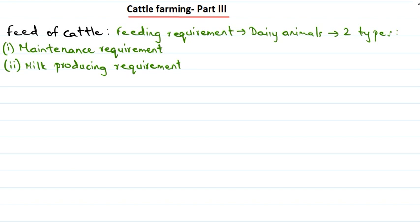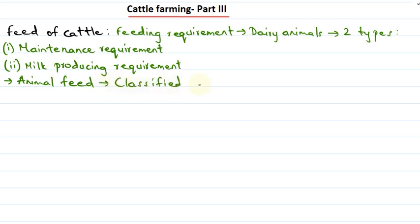The animal feed is classified into two types of substances. Animal feeding directly affects the quality of milk yield. We will now look at what these two types of substances of animal feed are.